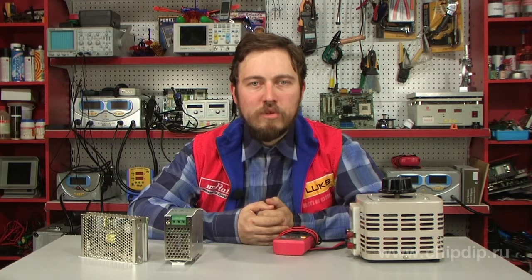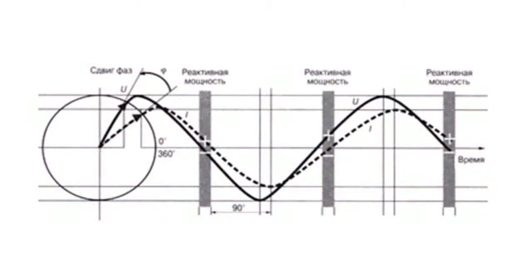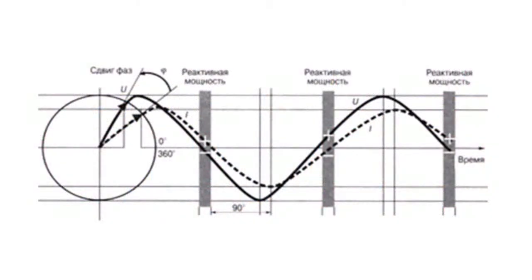At such moments, power is not consumed by the load but is transferred over the grid back to the generator. In this case, electric energy stored in each inductive element oscillates in the grid without being dispersed in active elements, producing oscillatory movement between the load and the generator.